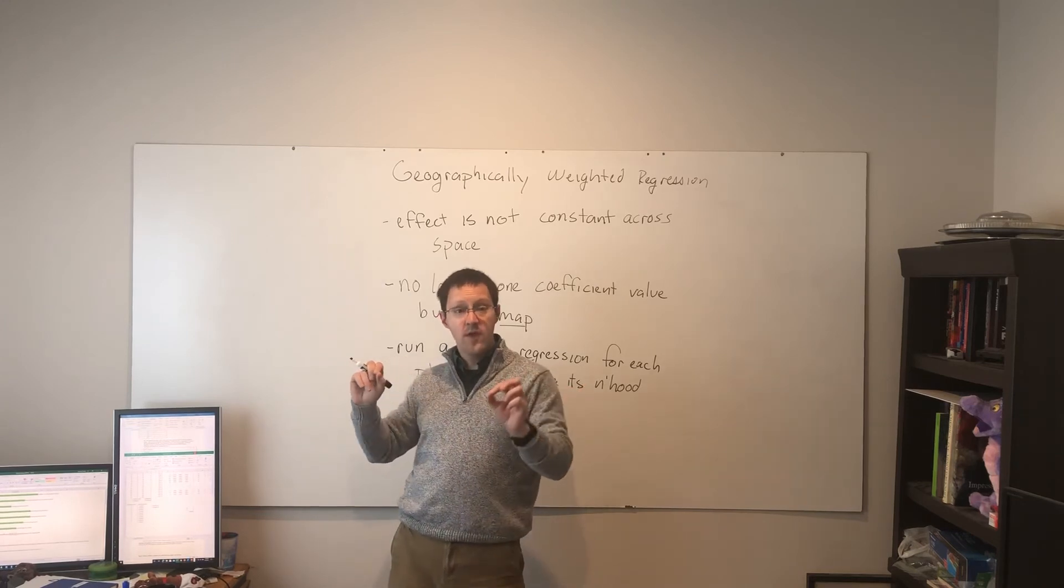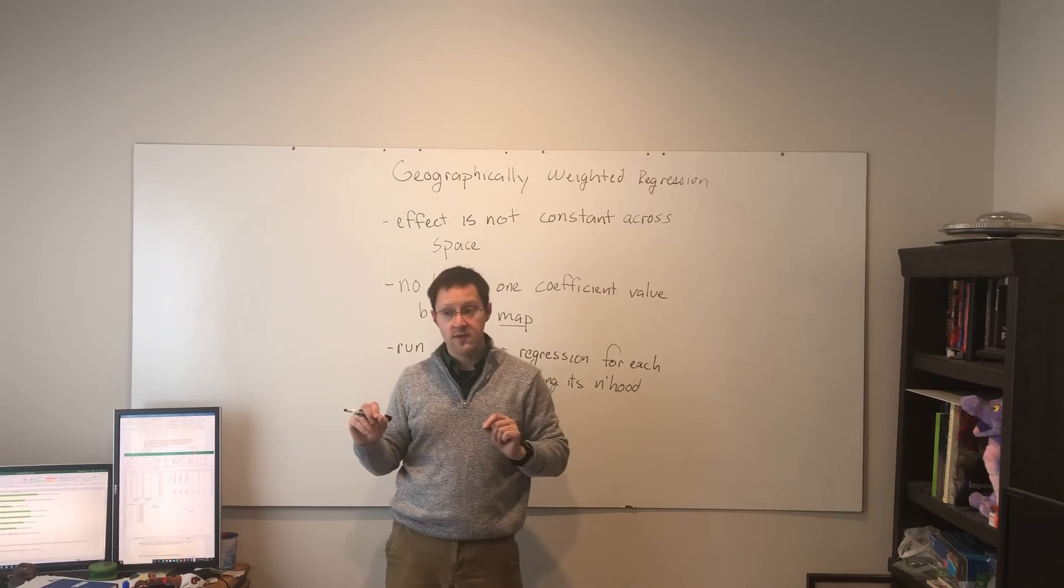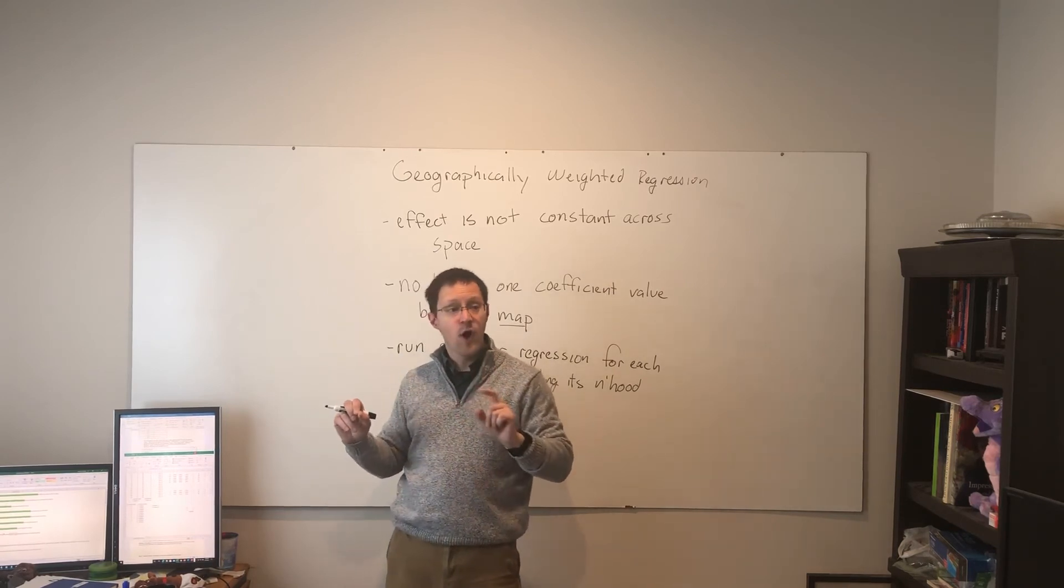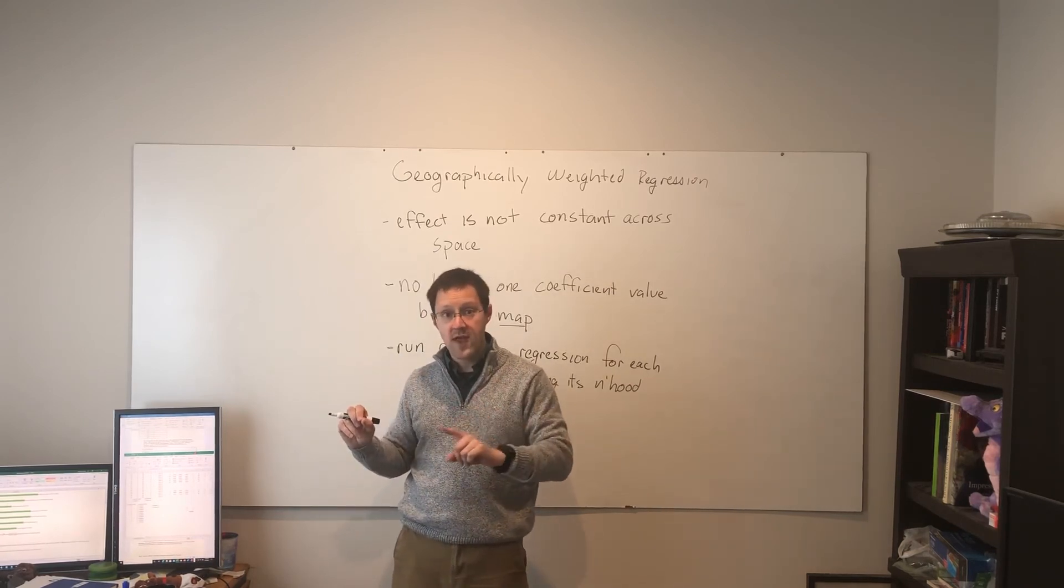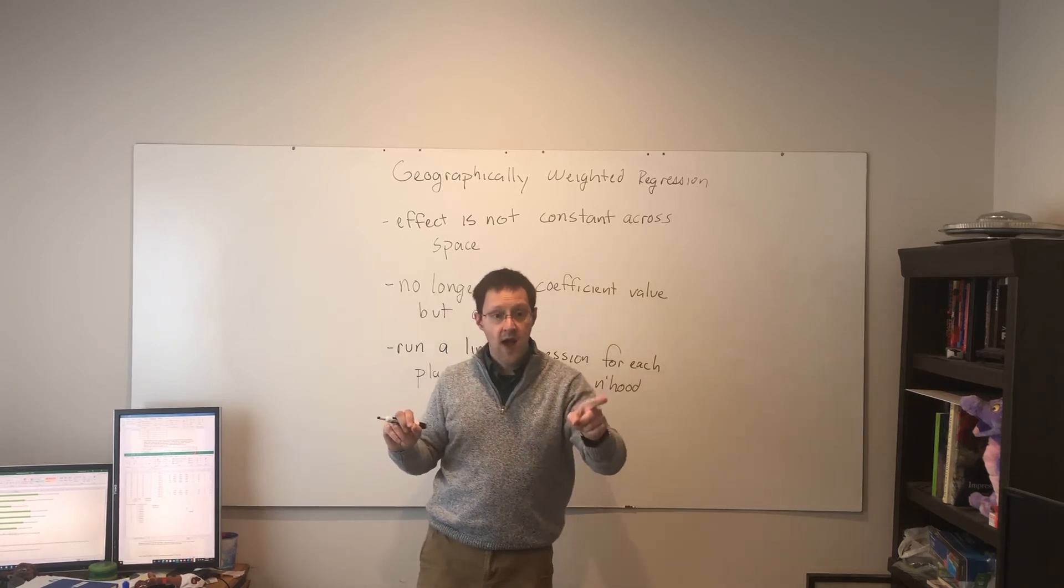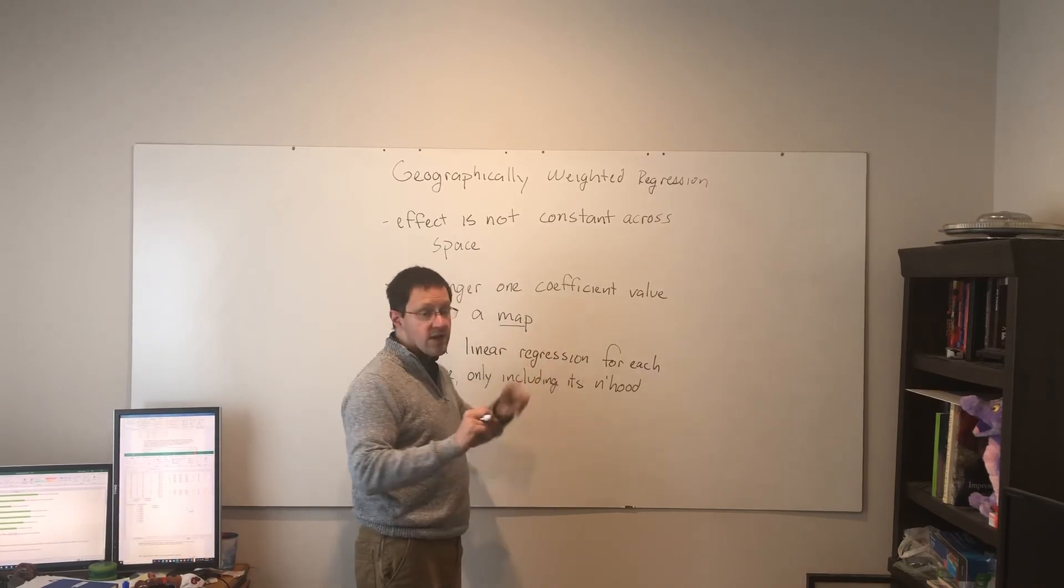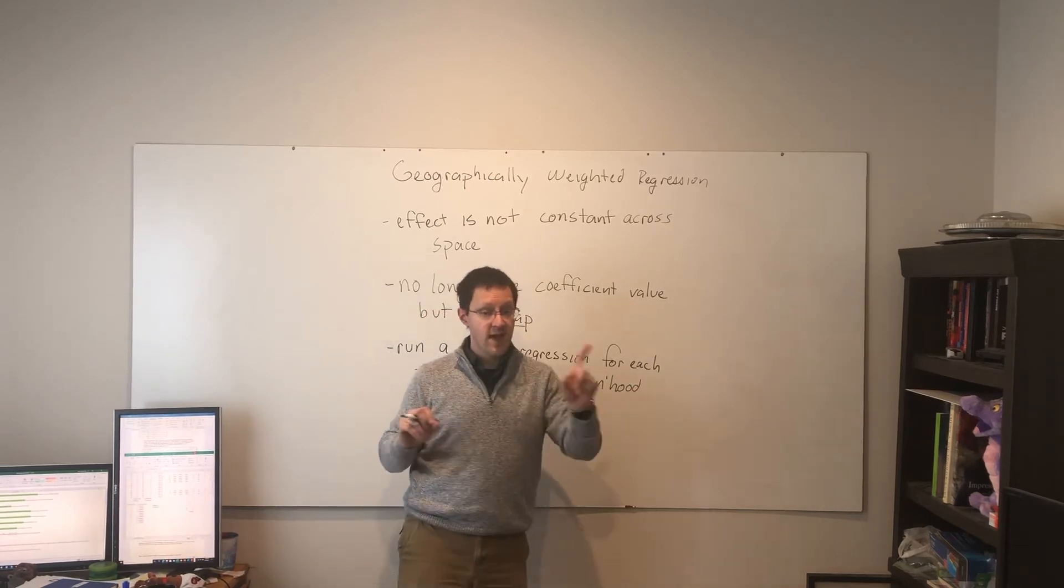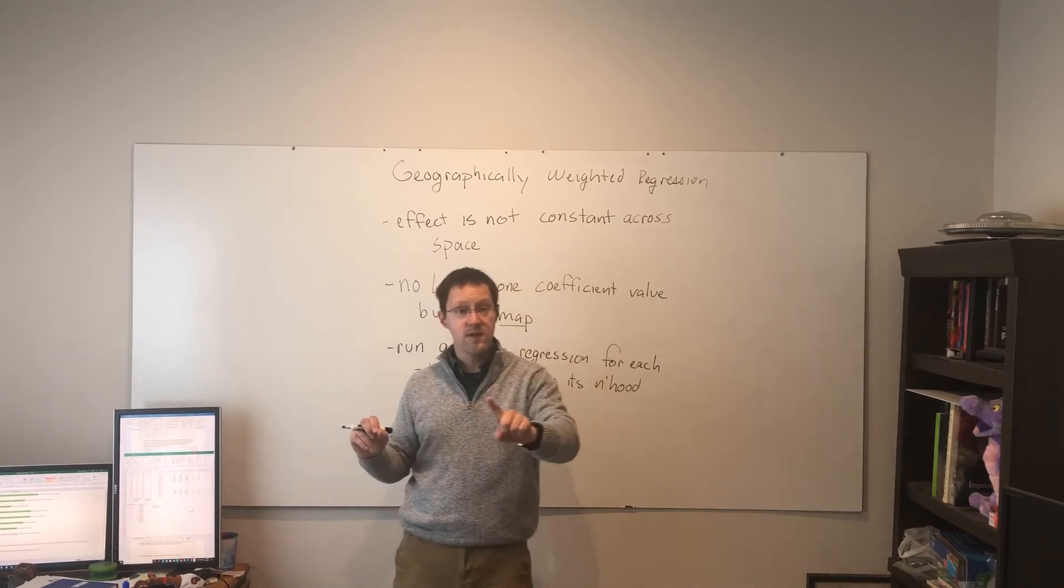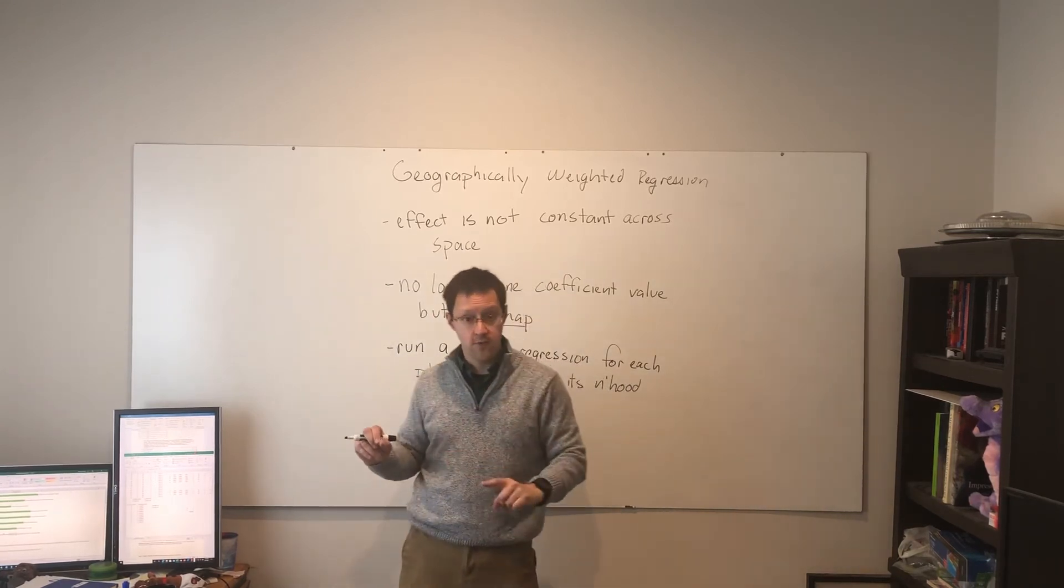Then, once I have the coefficient for every location, the local r-squared for every location, the p-value for every location, I can then map these out and say, here, instead of having a single coefficient, I have a map of the coefficients and how that changes from one place to another.